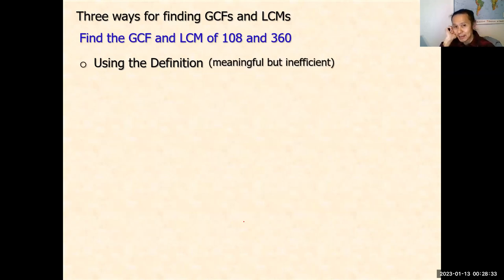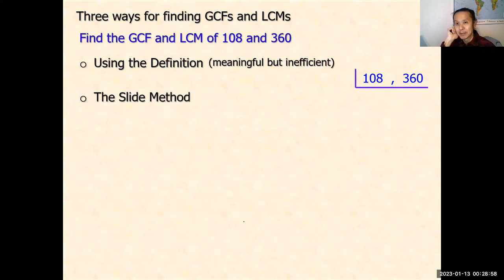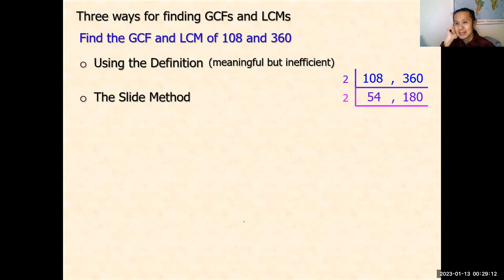This is the definition method — it is meaningful but inefficient. There is a more efficient way called the ladder method. You keep dividing both numbers by the same common factor. Since 108 and 360 are both even, divide by 2 to get 54 and 180. Since both are still even, divide by 2 again to get 27 and 90.